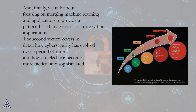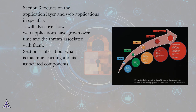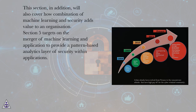Section 2 covers in detail how cybersecurity has evolved over time and how attacks have become more tactical and sophisticated. Section 3 focuses on the application layer and web applications specifically, including how web applications have grown over time and the threats associated with them. Section 4 covers machine learning and its associated components, and how the combination of machine learning and security adds value to an organization. Section 5 targets the merger of machine learning and applications to provide a pattern-based analytics layer of security within applications.